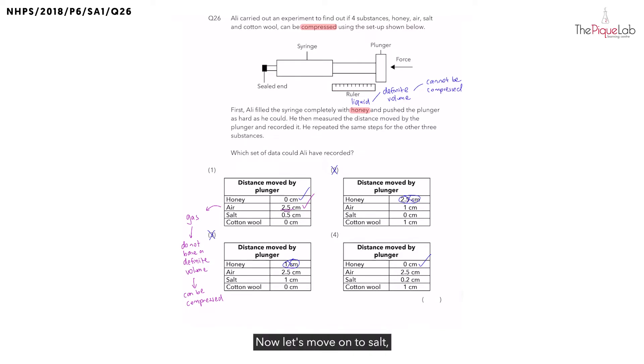Now, let's move on to salt. Now, what is the state of matter for salt? We know that salt belongs to the solid state. And we know that solids, similar to liquids, they have a definite volume, which means that salt cannot be compressed. That means the distance moved by the plunger should be 0 cm. Is that true? No. We must recall that salt is a tiny solid. And between the tiny particles of salt, there are actually air spaces between them.